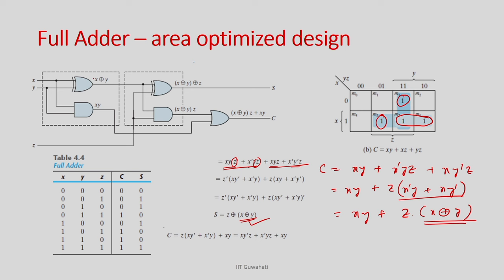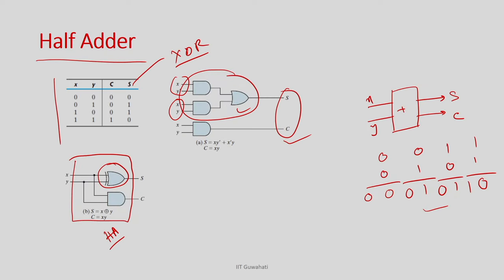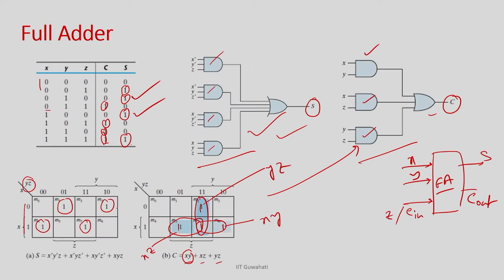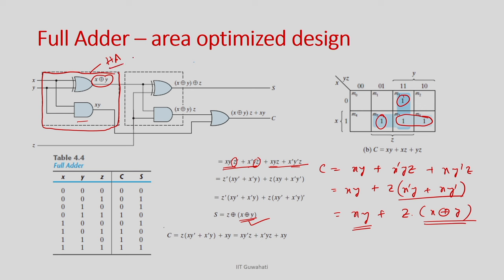Finally, what we need is: one XOR gate computing x⊕y, and one AND gate computing x·y — this is nothing but a half adder. So we can recall the half adder: one XOR gate and one AND gate. This implements x⊕y and x·y. Then we need to XOR the result with z.